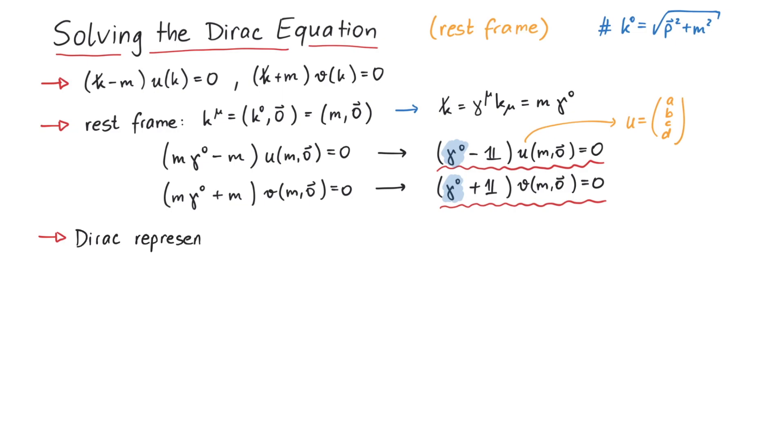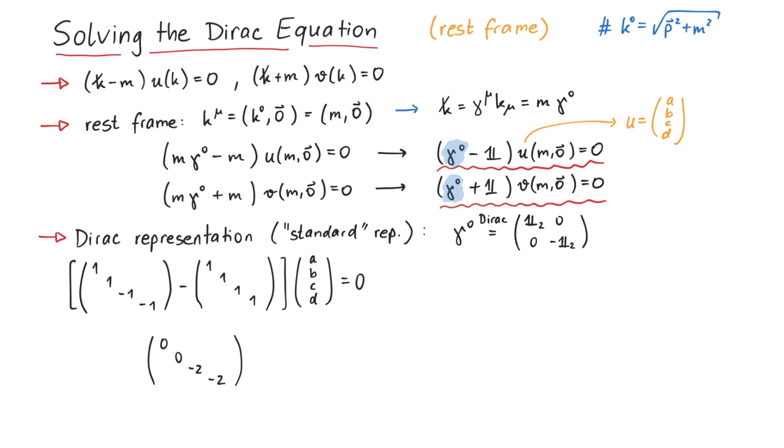First, we use the so-called Dirac representation, or standard representation of the gamma matrices. In order to remind ourselves which representation we're using, we'll write it on top of the equal sign. In the Dirac representation, gamma 0 is given as a diagonal matrix: 1, 1, minus 1, minus 1. Using this representation, we get the following set of four equations. We see that c and d must be 0. So u for the rest frame, and in the Dirac representation, is given by a, b, 0, 0.